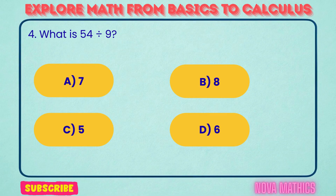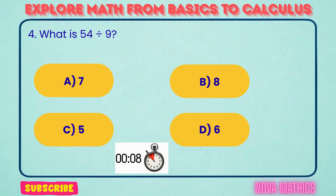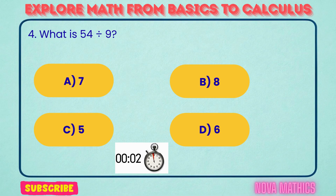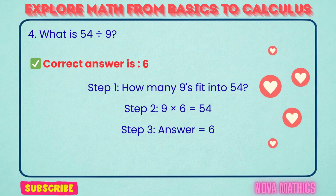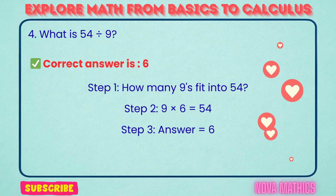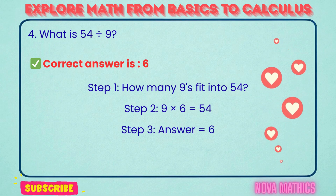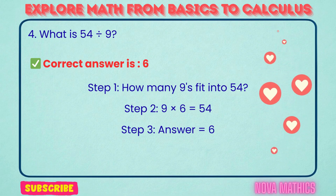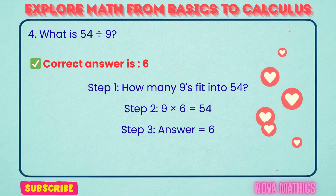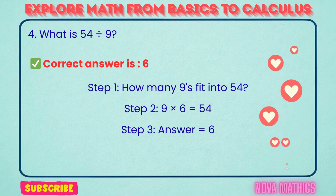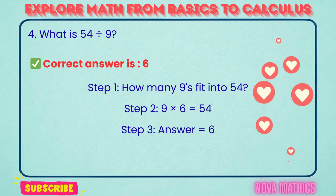4. What is 54 divided by 9? Correct answer is 6. 54 divided by 9 equals 6. We find this because 9 times 6 is 54.